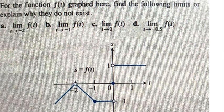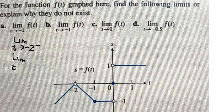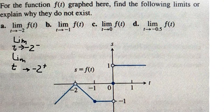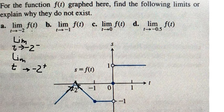Question a: t approaches negative two. We need to consider the limit on the left and the limit on the right. On the left, as we go closer and closer to negative two, the value of y approaches zero. Similarly, on the right of negative two, they go closer and closer and also reach y equals zero. So the value of this limit is zero.